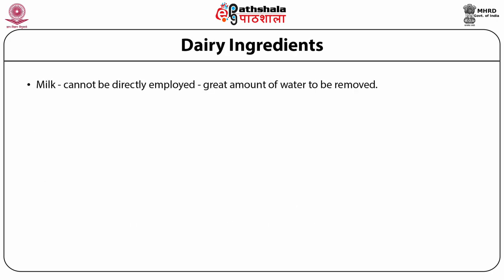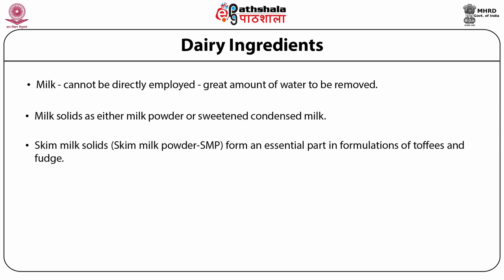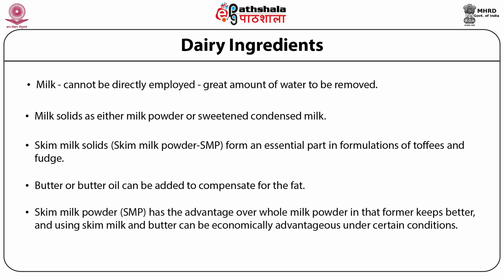Milk cannot be directly employed in the manufacture of confectionery as the water that needs to be removed is too great. Milk solids as either milk powder or sweetened condensed milk are a favorable choice for confectionery. Chocolate confectionery largely depends on dried milks only. Skim milk solids form an essential part in the formulation of toffee and fudge. Butter and butter oil can be added to compensate for the fat absent in skim milk powder. Skim milk powder has the advantage over whole milk powder in that it keeps better, and using skim milk and butter milk powder can be economically advantageous.